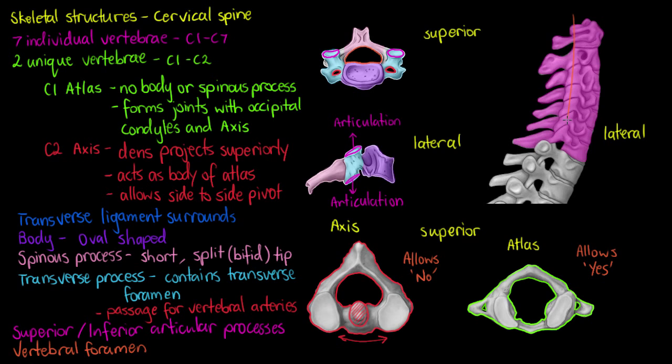That oval shape is due to the path the spinal cord is going to have to travel in the cervical spine. If we look at our spine as a whole, we'd see a concave, convex, and then concave shape again, as far as cervical, thoracic, and lumbar goes, and the shape of our vertebral foramen will reflect that because the spinal cord has to pass through it freely. That covers everything we need to know about the basics of our cervical spine — I hope this video has been helpful, thanks for watching and I'll see you again soon.